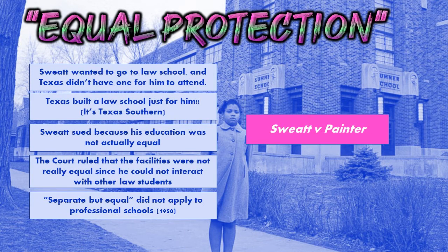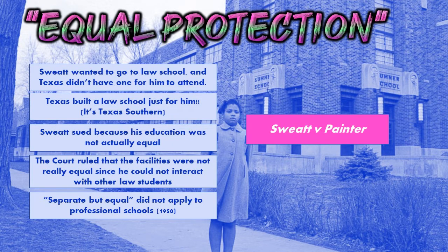Next is Sweatt versus Painter in Texas. The state saw that Oklahoma, since they didn't have separate but equal facilities, was forced to desegregate the University of Oklahoma. In Texas, Sweatt wanted to go to law school, but Texas didn't have a law school for African-American students. Texas saw what happened in Oklahoma and did not want to be ordered to allow him to attend UT. So Texas literally built a law school just for him — a full law program — and he was the only student. This is actually Texas Southern, which still exists today, but this is the reason it was initially created.